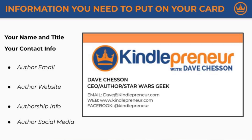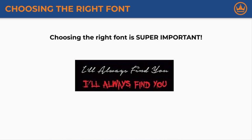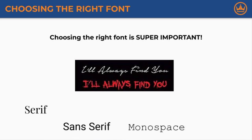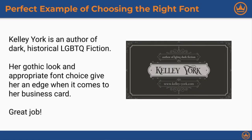Now once you know what you're going to put on the card, you need to consider how it's going to look, and that all starts with the right font selection. Selecting the right font can have a deep impact on exactly what meaning you're trying to portray. The top font shows a whimsical statement of love while the bottom one doesn't look very inviting. There are many different font selections such as serif, sans serif, monospace, and script — these can each give your card character and direction. Also look for genre or decade-specific fonts; these can go a long way in making your business card look interesting and relevant. Kelly's done an awesome job at choosing a font and layout that represents her genre well.